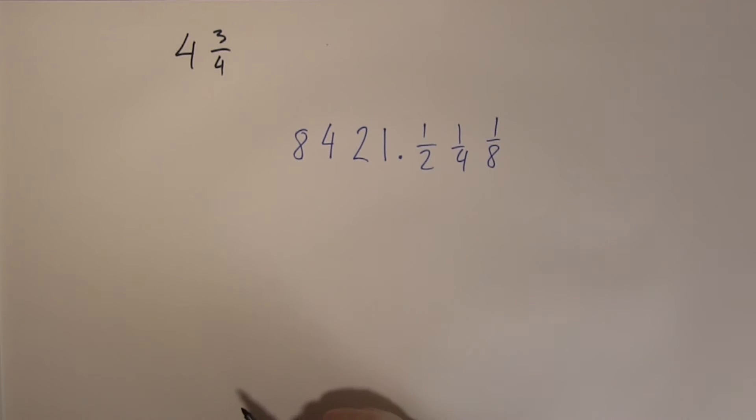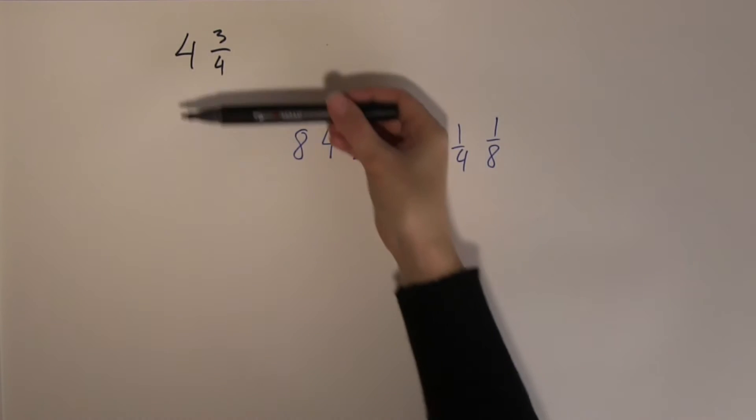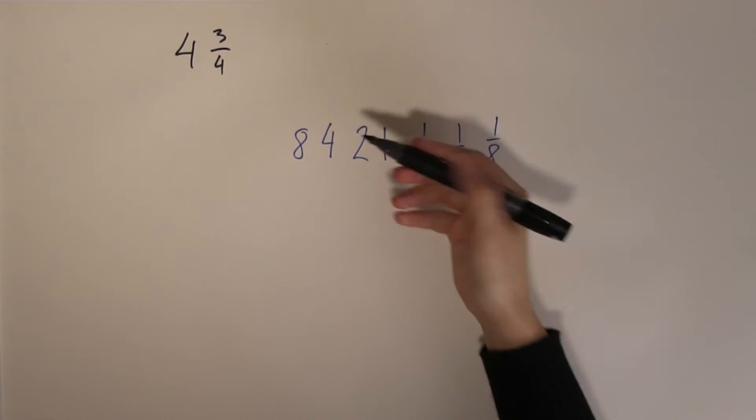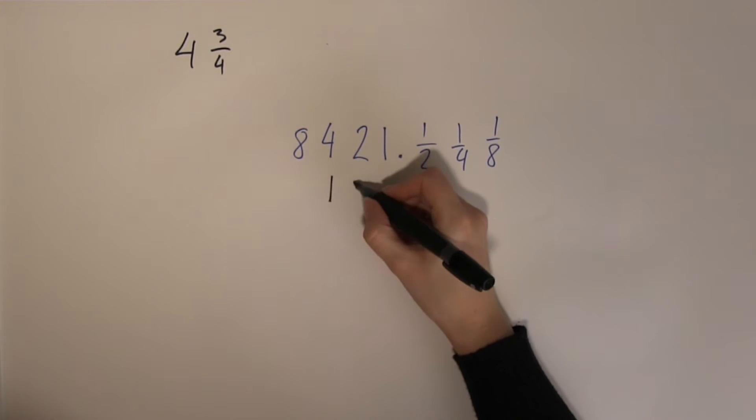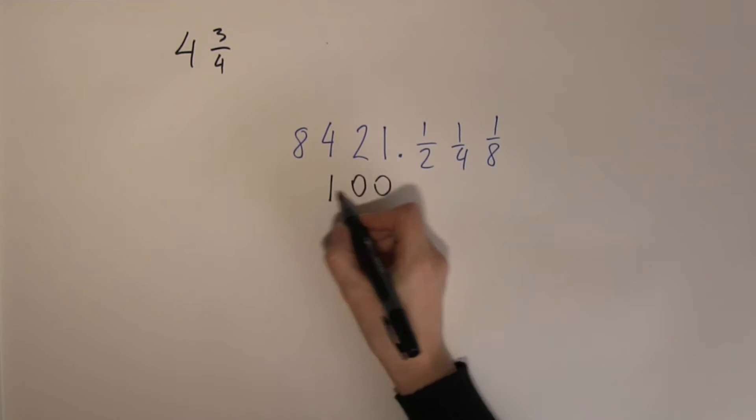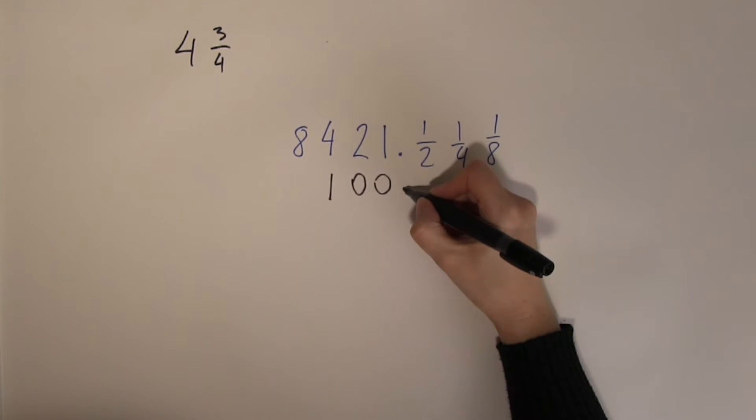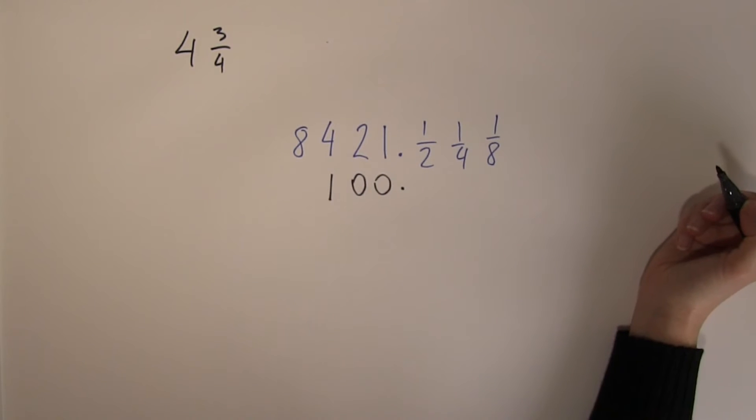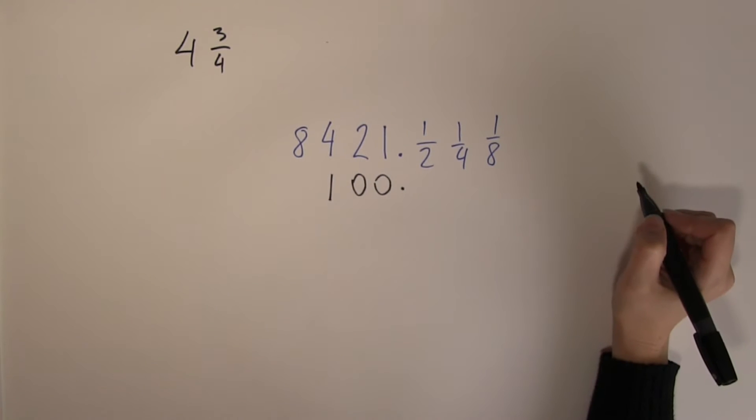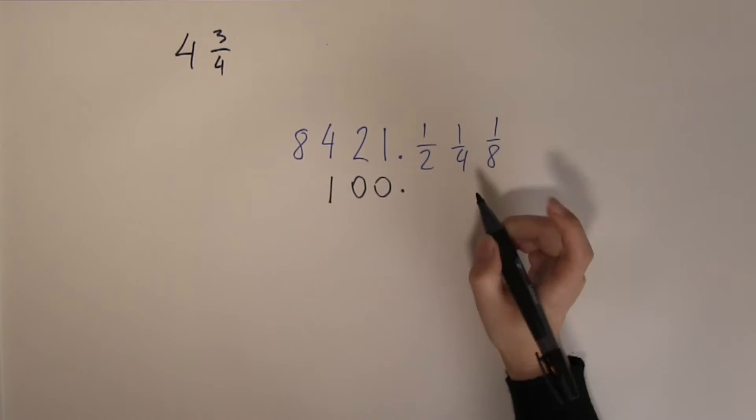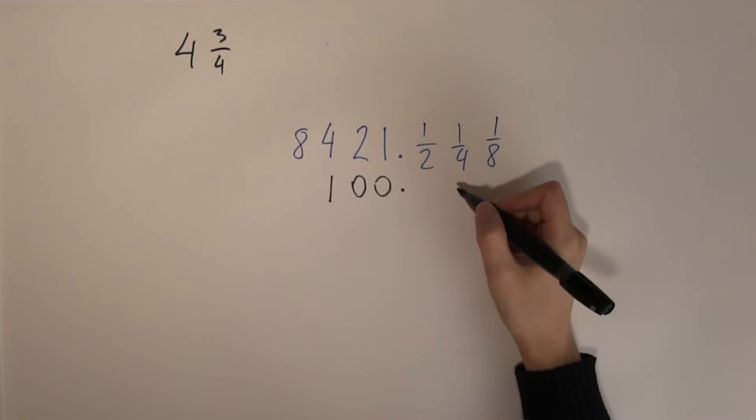Now what happens here? When it comes to the whole part, the 4, I know that I can build that up from using 1, 4, and nothing else. So I will need the place value orders, and then the radix point. Now 3 quarters. Well, the obvious thinking would be, oh let's just put a 3 in here.